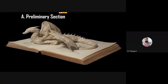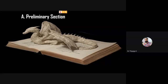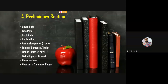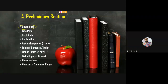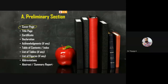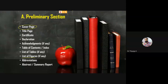What comes under the preliminary section? The things that should be covered in the preliminary section are: cover page (the first page), title page, certificate, declarations, acknowledgements, table of contents, list of tables, list of figures, sometimes a list of abbreviations, and in some previous reports, a one or two page summary report or abstract.